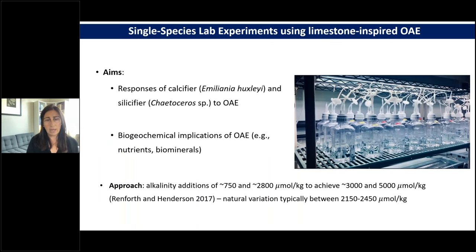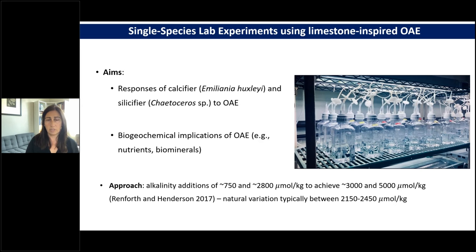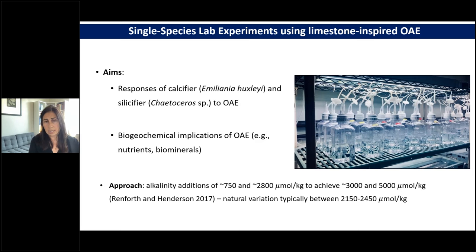The aim was to look at responses in Emiliania huxleyi — the representative coccolithophore — and a silica-producing species of Chaetoceros, both ecologically important. We looked at physiological parameters and biogeochemically relevant parameters following alkalinity enhancement. The values we aimed for were 3,000 and 5,000 micromoles of total alkalinity per kilogram of seawater, meaning adding approximately 750 and 2,800 micromoles per kilogram of seawater, following recommendations by Phil Renforth and Gideon Henderson in 2017.